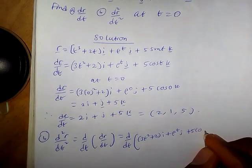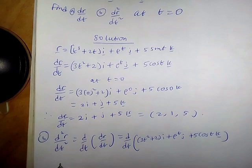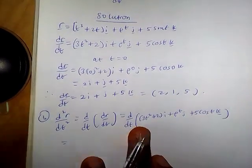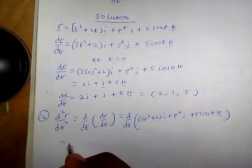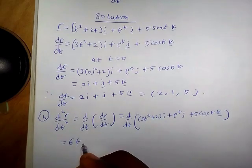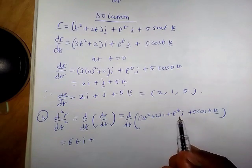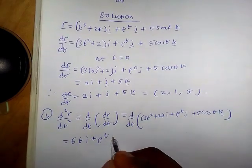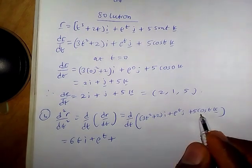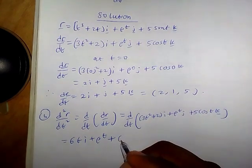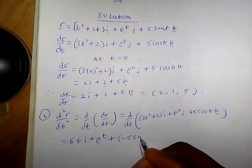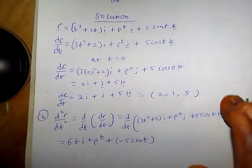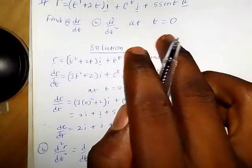Now we differentiate component-wise. For the i component we get 6t i. When we differentiate the j component we have e^t, it doesn't change. When we differentiate 5cos(t) we obtain minus 5sin(t) k. We then evaluate at t equals 0.